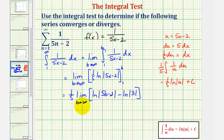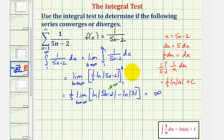Now notice, as b approaches positive infinity, five b minus two also approaches positive infinity. And therefore, the natural log of the absolute value of five b minus two also approaches positive infinity. And therefore, one-fifth times this limit also approaches positive infinity, which means our integral diverges, and so does our infinite series.